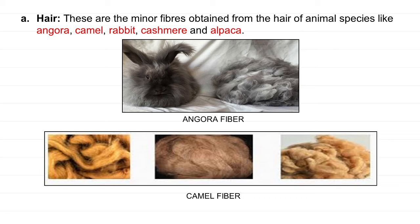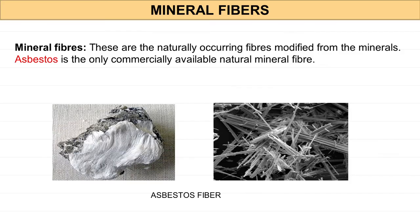Hair fibers include angora, camel, rabbit, cashmere, and alpaca. These are all hair fibers. Next is camel fiber — we can also take fibers from the camel. This is a mineral fiber — asbestos, which has strong strength.